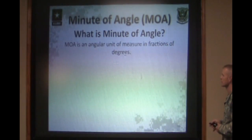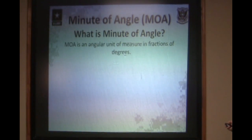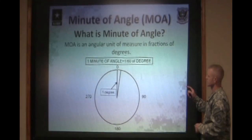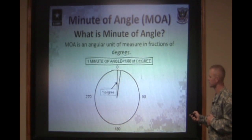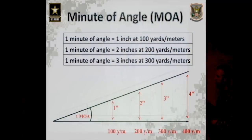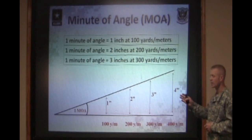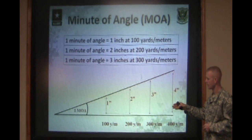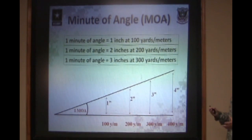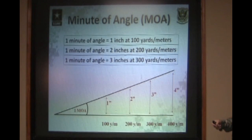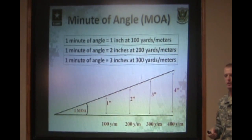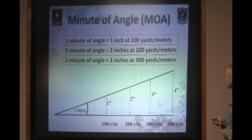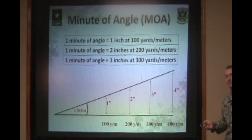So what is a minute of angle? It's an angular unit of measure — a fraction of a degree. One minute of angle is nothing more than one sixtieth of one degree. You have 360 degrees in a circle, and one sixtieth of one degree is one minute of angle. As it pertains to a shooter, one minute of angle equals one inch per 100 meters. So one minute of angle equals one inch at 100 yards or meters, two inches at 200, three inches at 300, and so forth all the way to ten inches at 1,000. All of those measurements are still one minute of angle. Each click on your sight system either moves a half minute of angle or a full minute of angle depending on which direction you're moving it.